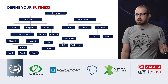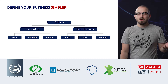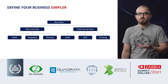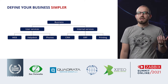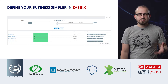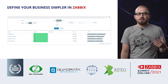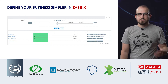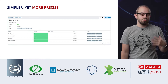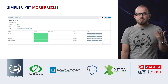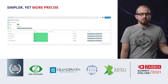Our engineers can keep all that in their heads — they know where exactly everything is based. But from a business perspective, that's a lot and can be convoluted. So why not define it simpler, just as is? We have a business, we have user services, we have internal services, and user services are based on this, and internal services are based on this. As simple as you see right now. And then we define it in Zabbix, just as simply. We define that we have customers, some internal services, we can specify which specific services the customers use, and also specify which services we are using to provide those services.